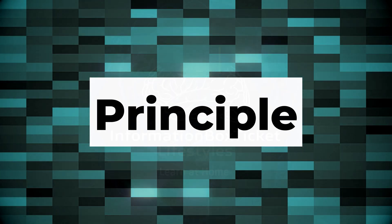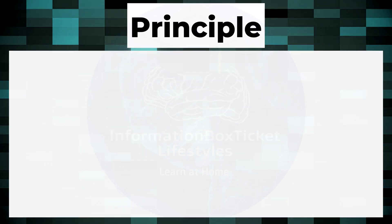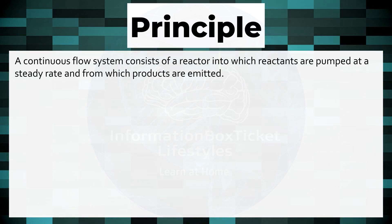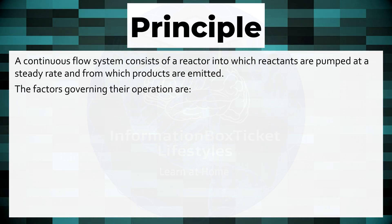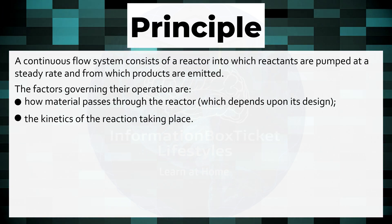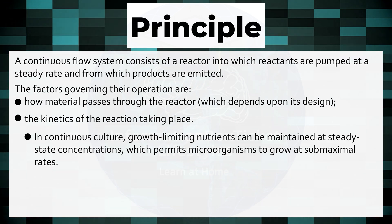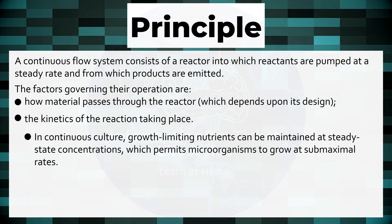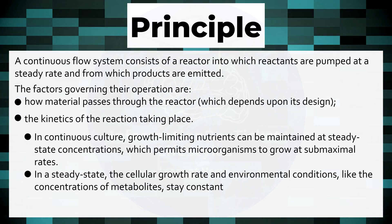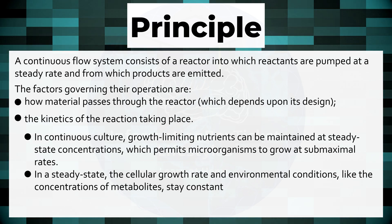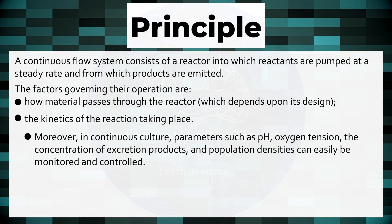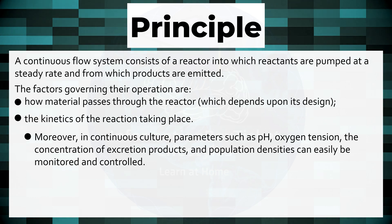Principle of Continuous Culture. A continuous flow system consists of a reactor into which reactants are pumped at a steady rate and from which products are emitted. The factors governing their operation are how material passes through the reactor, which depends upon its design, and the kinetics of the reaction taking place. Growth-limiting nutrients can be maintained at steady-state concentrations, permitting microorganisms to grow at sub-maximal rates. In a steady state, cellular growth rate and environmental conditions — such as concentrations of metabolites — stay constant. Parameters like pH, oxygen tension, concentration of excretion products, and population densities can easily be monitored and controlled.